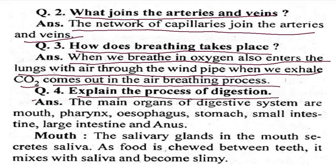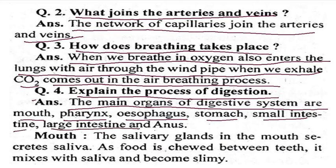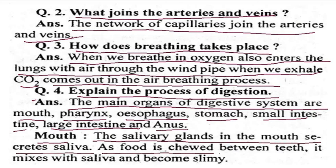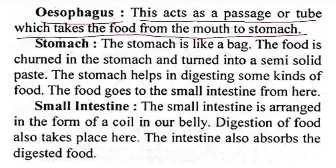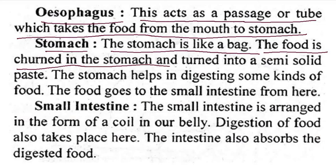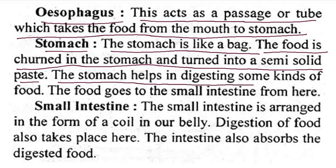Explain the process of digestion. The main organs of the digestive system are mouth, pharynx, esophagus, stomach, small intestine, large intestine, and the anus. In the mouth, the salivary glands secrete saliva. As food is chewed between the teeth, it is mixed with saliva and becomes soft. The esophagus is the passage tube which takes food from the mouth to the stomach. The stomach is like a bag — food is churned there and turned into a semi-solid paste. The stomach helps in digesting some kinds of food, and this food then goes to the small intestine.